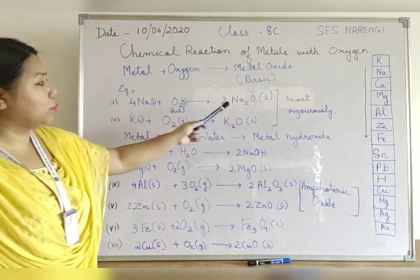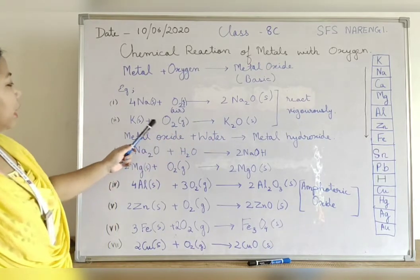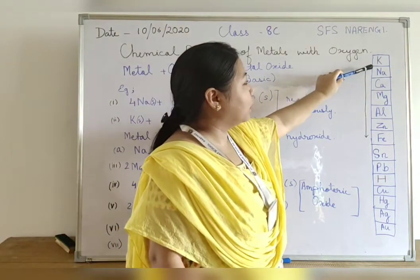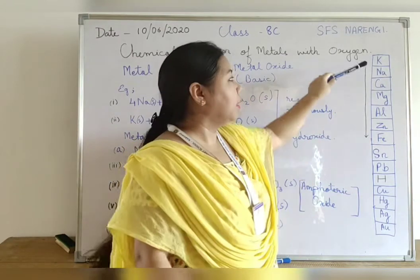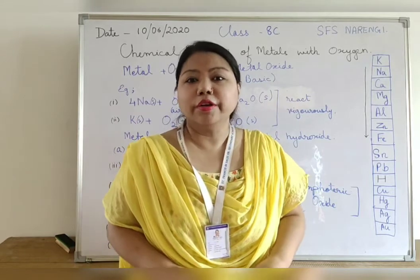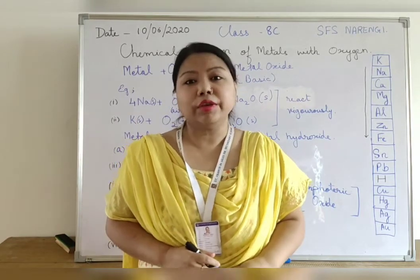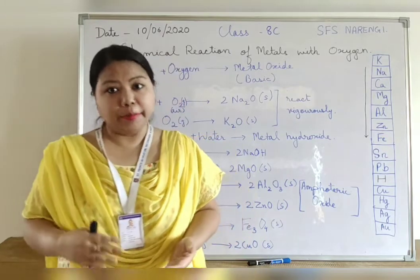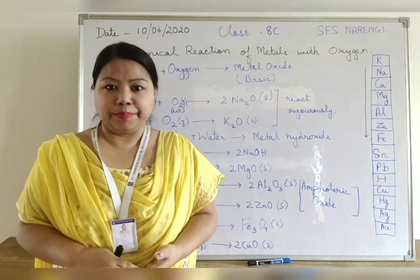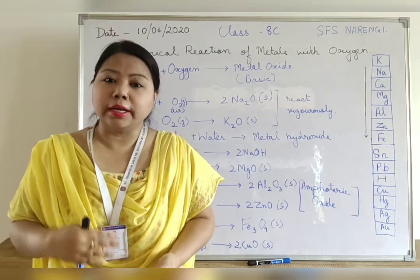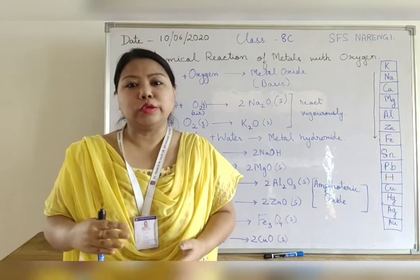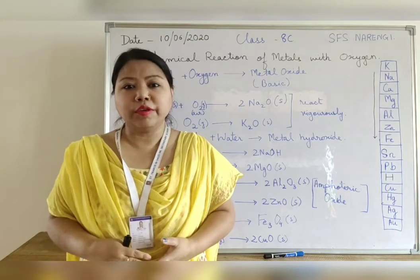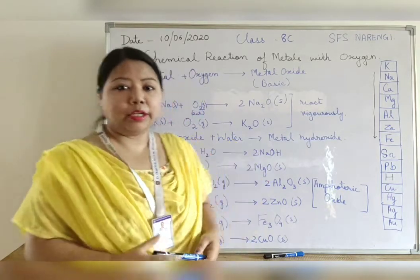Sodium reacts with oxygen to produce sodium oxide, and potassium reacts with oxygen to produce potassium oxide. Sodium and potassium are at the topmost position in the reactivity series, meaning they are very reactive metals. They are so reactive that they will react with oxygen present in air at room temperature. This is why these metals are stored under kerosene or paraffin, so that they do not react with oxygen in the atmosphere.